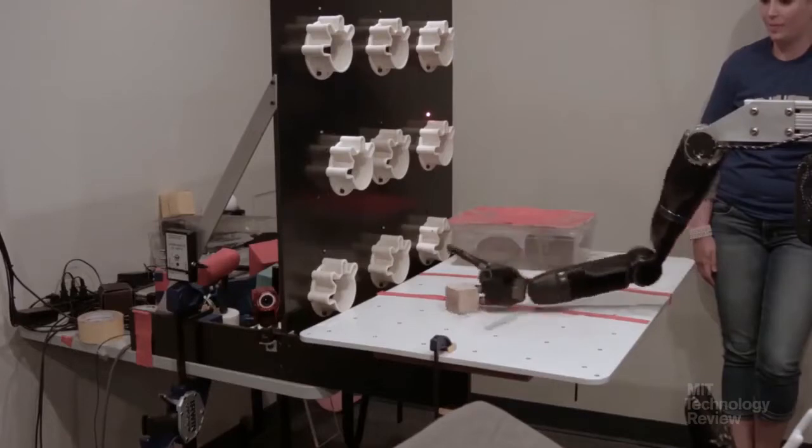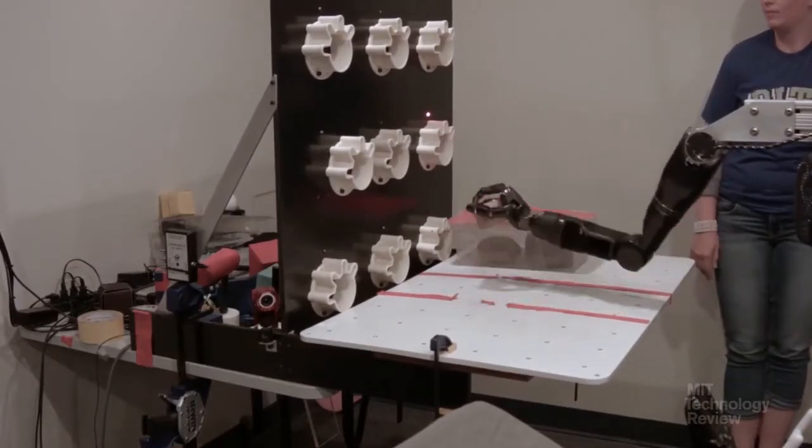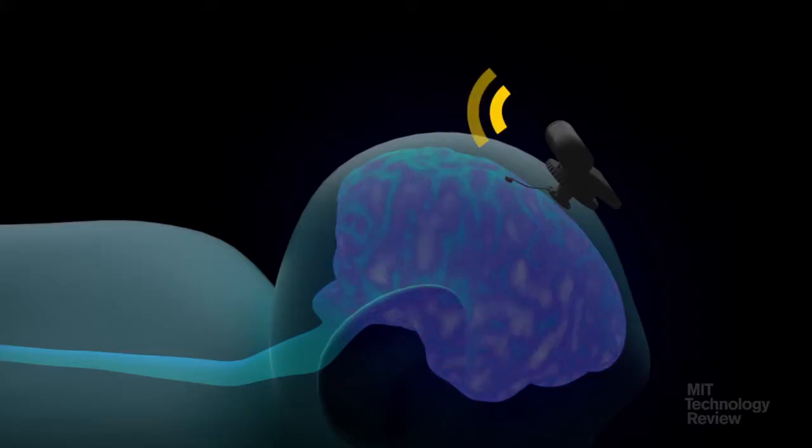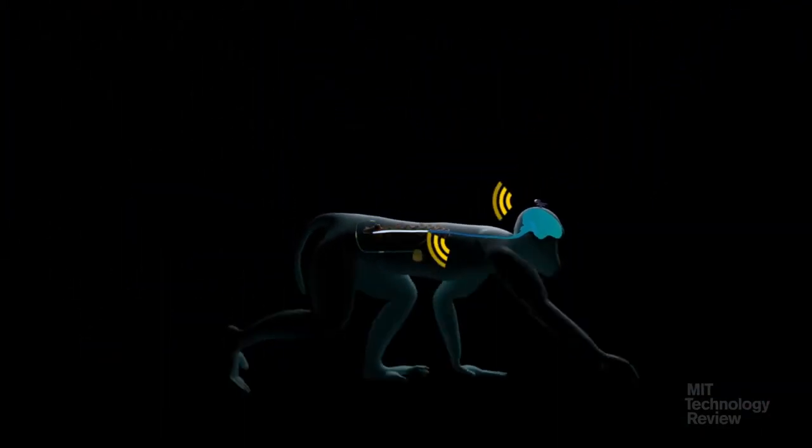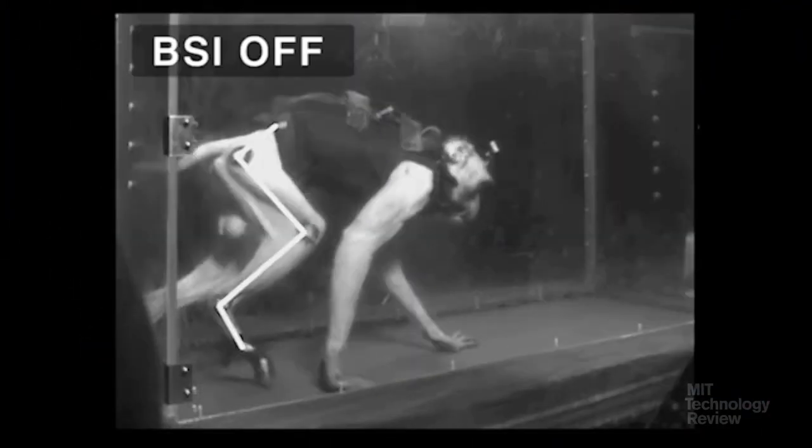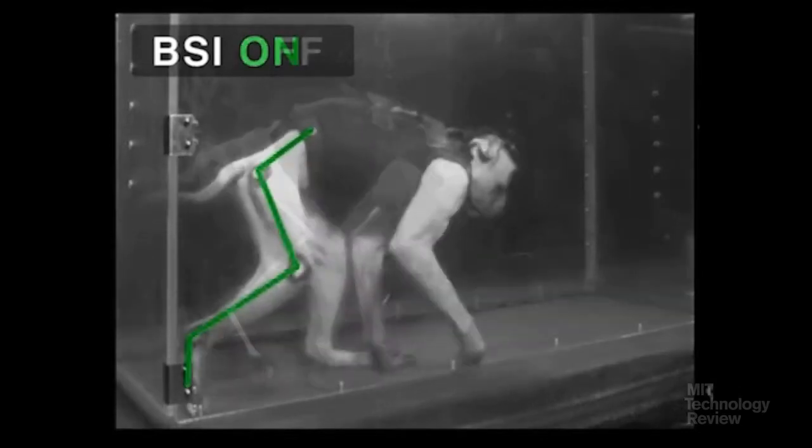You may have heard there's experiments where people get a probe put in their brain, it reads their thoughts and they can control a robot arm or maybe a cursor on a computer screen. But what's happening now is that scientists are connecting that brain probe to electrodes in people's arms or legs and allowing them to move their limbs again using their thoughts.